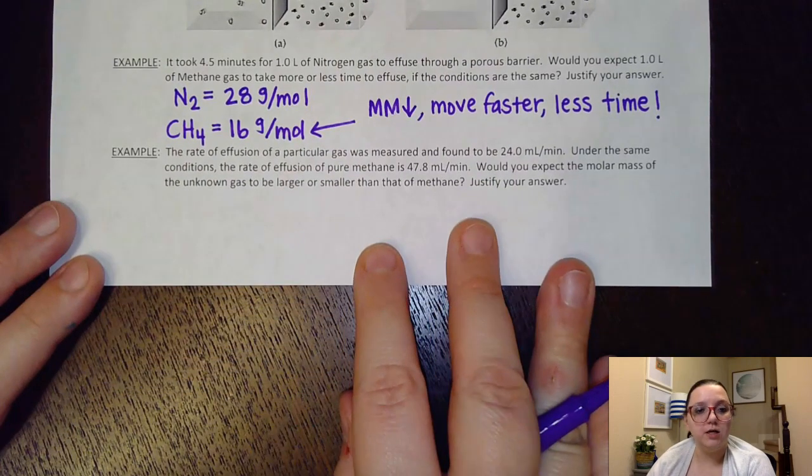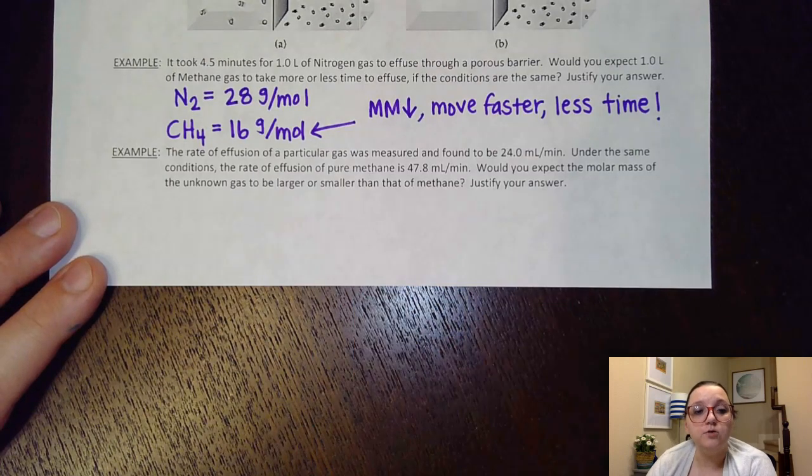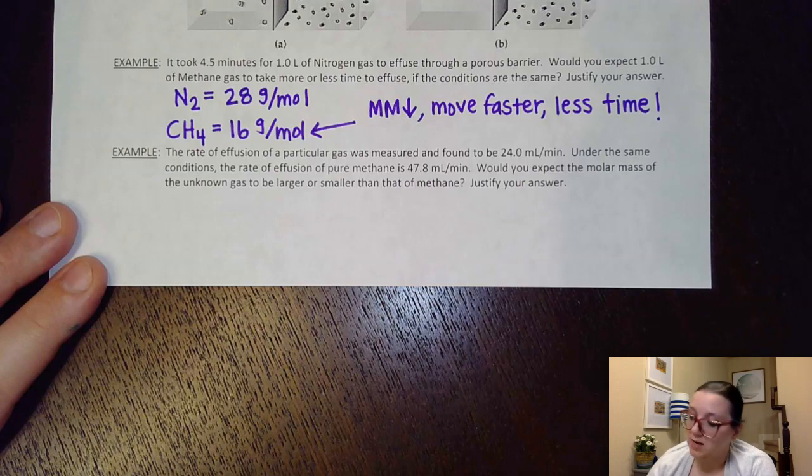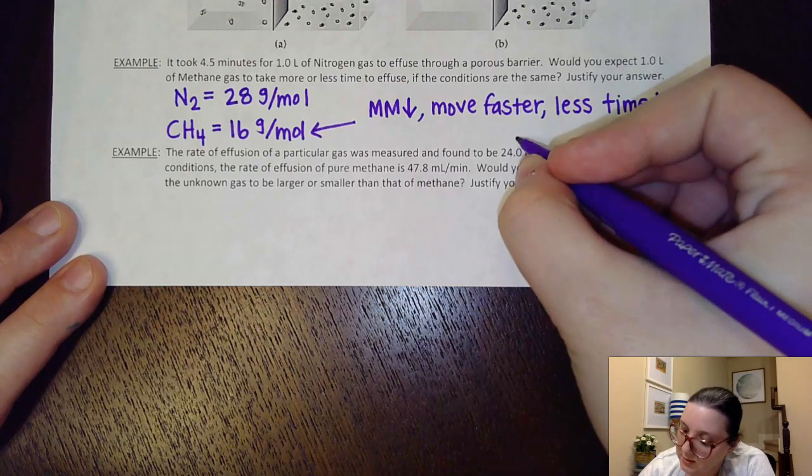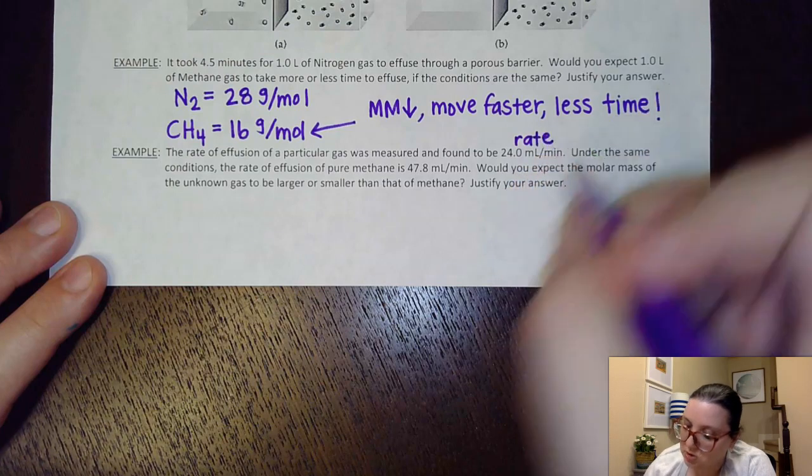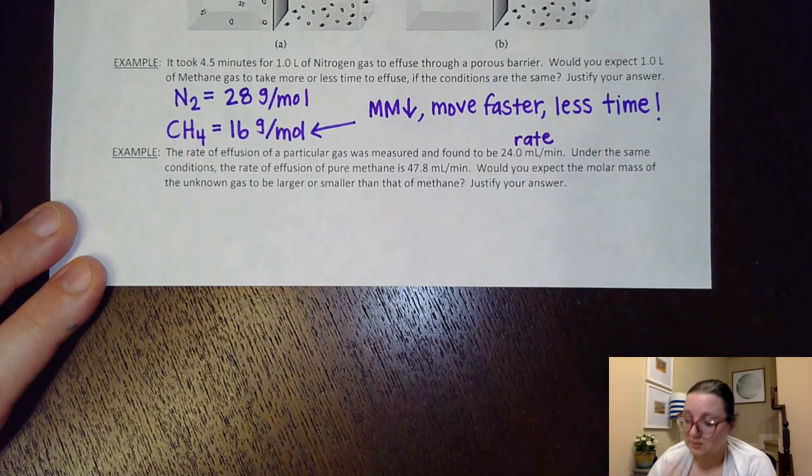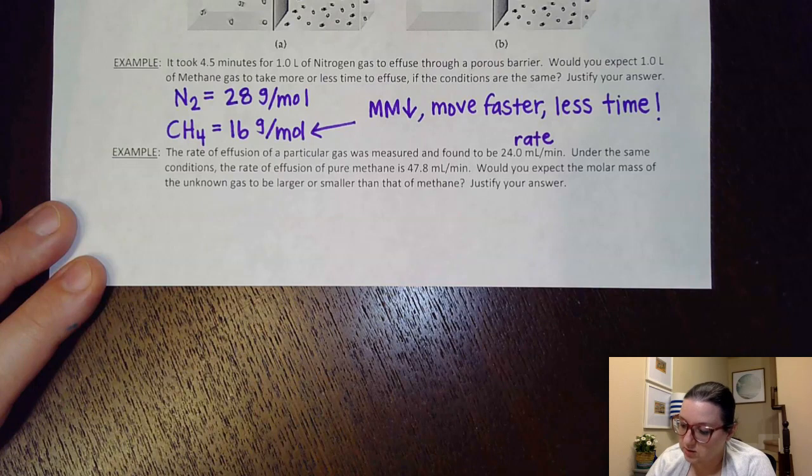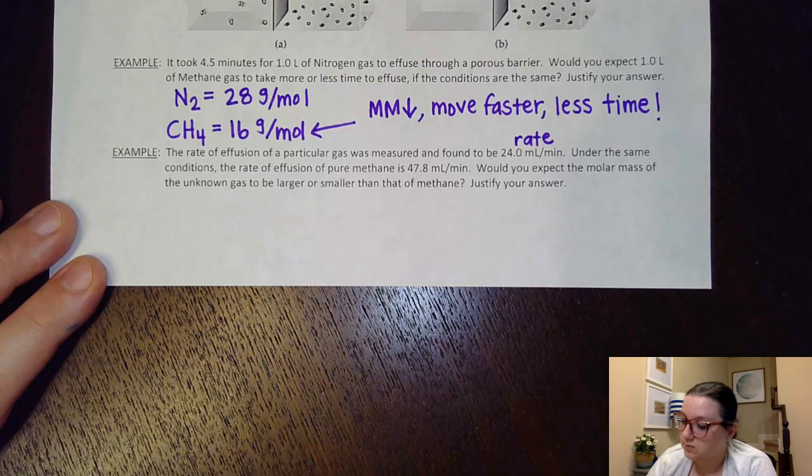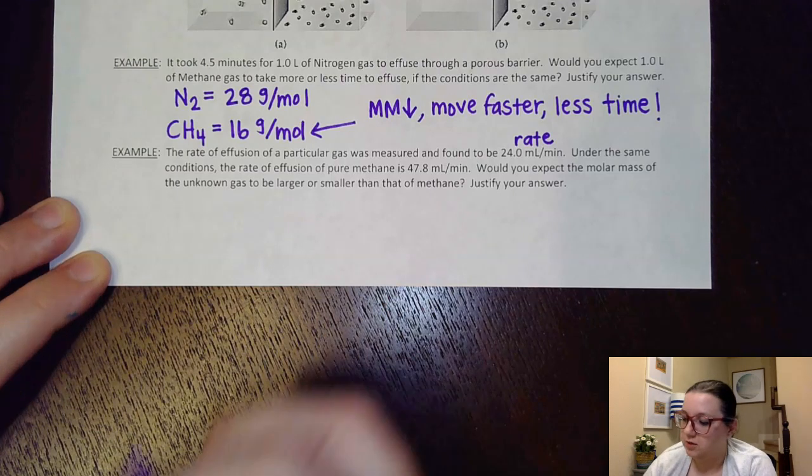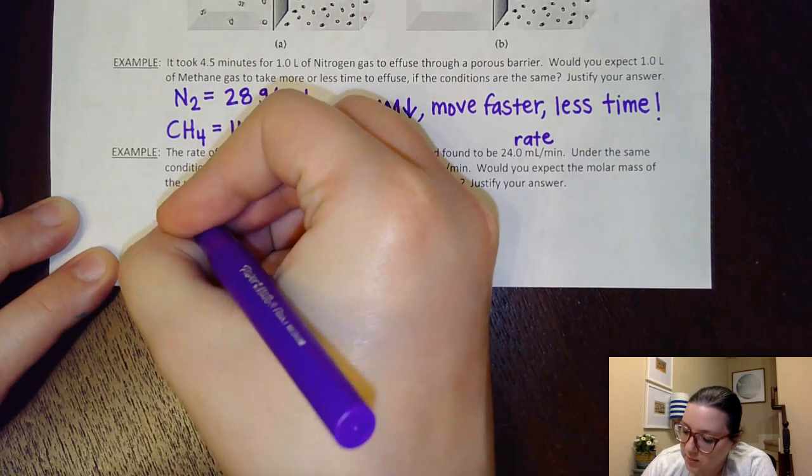All right, we've got one last question here. It says that the rate of effusion of a particular gas was measured and found to be 24 milliliters per minute. So what they're giving me here is a rate at which effusion was taking place. Under the same conditions, the rate of effusion of pure methane is 47.8 milliliters per minute. Would you expect the molar mass of the unknown gas to be larger or smaller than that of methane? So I'm going to actually rewrite my information here for a minute.